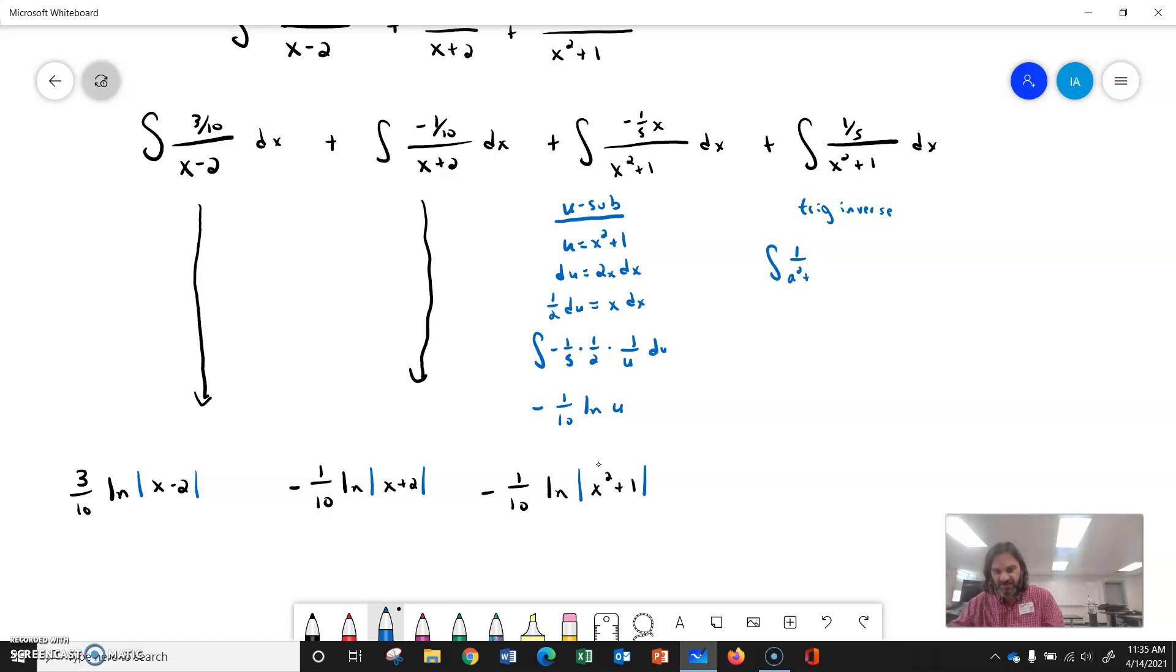1 over a squared plus u squared du. Let's fix that 1 so it doesn't look so tacky. So that gives me 1 over a tangent inverse of u over a. So clearly my u is the x and my a is the 1. So we're going to have as our final here, a plus 1 fifth,